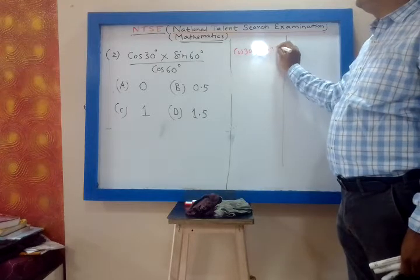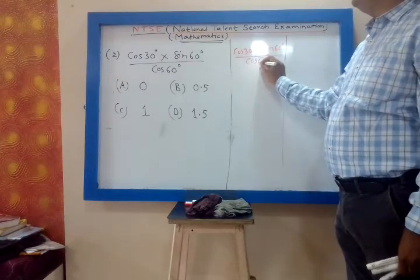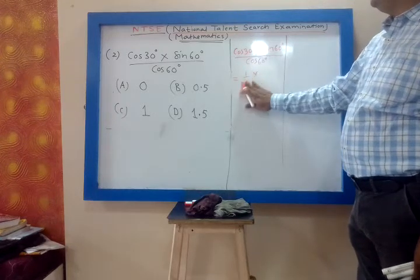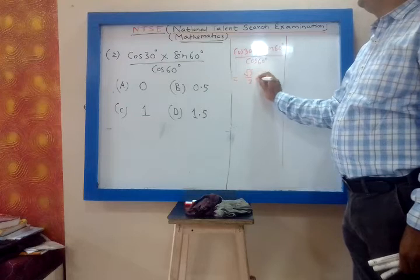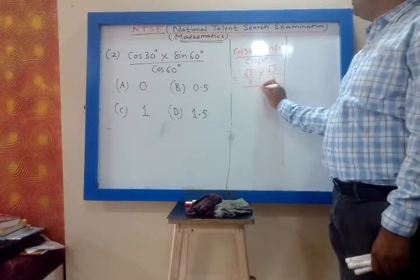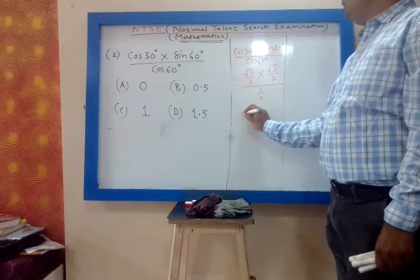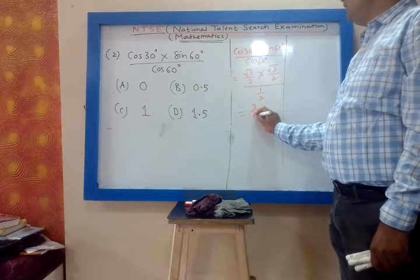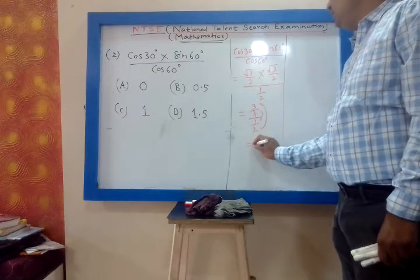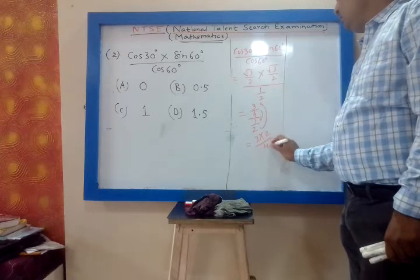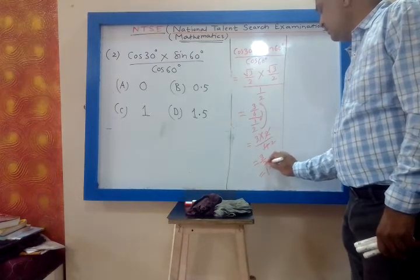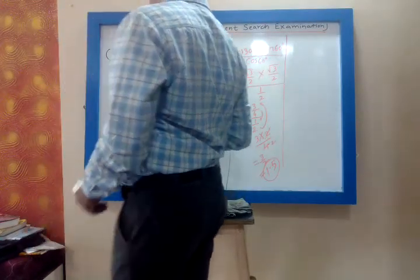Using the trigonometric ratios of standard angles: cos 30 is root 3 by 2, sin 60 is root 3 by 2, cos 60 is 1 by 2. So the expression becomes (root 3 by 2) into (root 3 by 2) upon (1 by 2), which equals 3 by 4 upon 1 by 2, giving 3 by 2, that is 1.5.